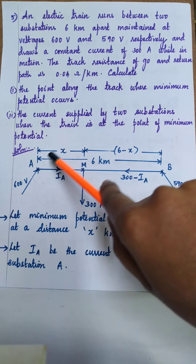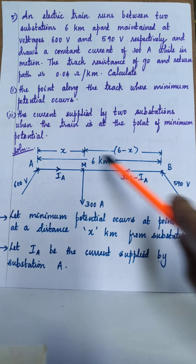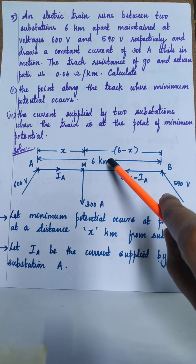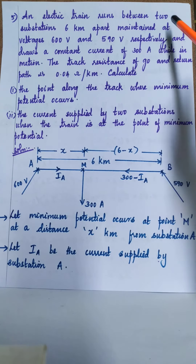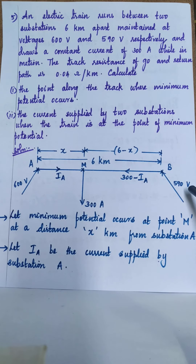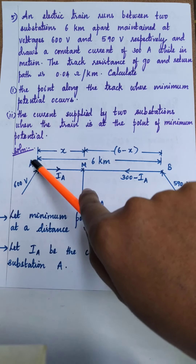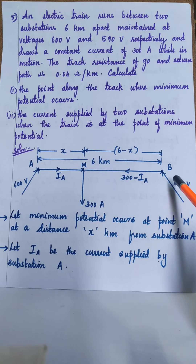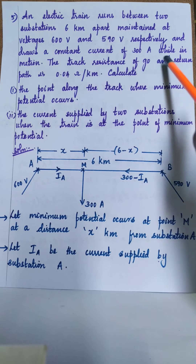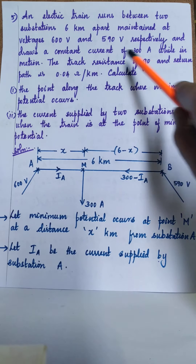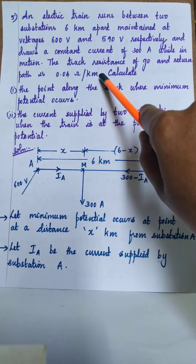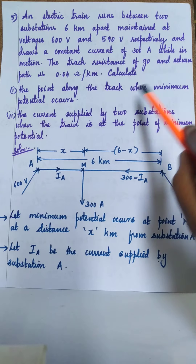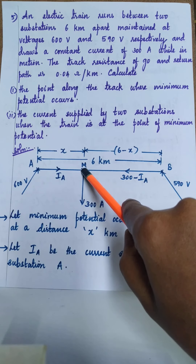An electric train is running between two substations A and B, with a distance of six kilometers between them. Substation A is maintained at 600 volts and substation B at 590 volts. The resistance of both the go and return conductor is 0.04 ohm per kilometer. We are asked to calculate the point along the track where minimum potential occurs, so we have marked point M as that point.